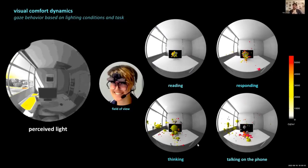They are showing the level of concentration of the users and the time when the users were distracted and looking to the other side. As you see, when the user was reading, almost all their concentration was on the task. But when they were responding, talking on the phone, or thinking, they were distracted by the window, which is the source of light. It tells us the importance of daylighting and how human nature is attracted by natural light and how much we need it.